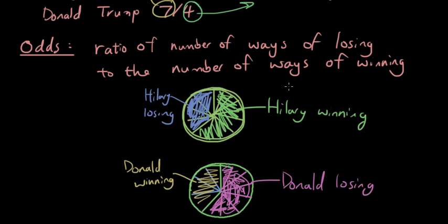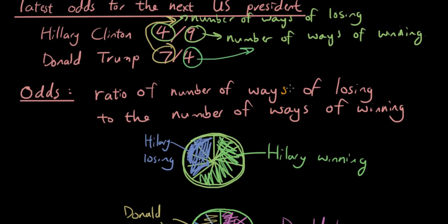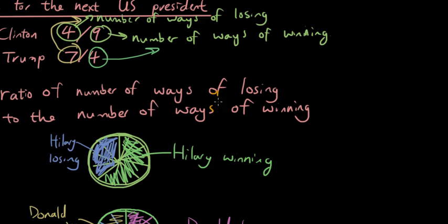So how do we convert this to a probability? So to convert these odds to probabilities, all you got to do is you're going to get Clinton's odds. So four to nine, you're going to add them together. So for Clinton, total outcomes is four plus nine, which is 13.